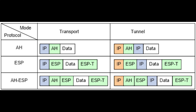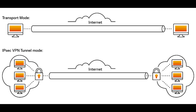The ESP protocol provides data confidentiality and authentication, using the same algorithms but with different coverage. AH authentication covers the entire IP packet including the outer IP header, while the ESP authentication mechanism authenticates only the IP datagram portion of the IP packet. IPSec has two modes: tunnel mode and transport mode.